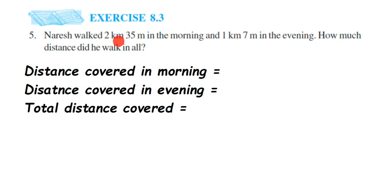They have given kilometer and meter together, so let's write down what we know. Distance covered in the morning is 2 kilometer 35 meter. Distance covered in the evening is 1 kilometer 7 meter. We have to find out the total distance he covered.